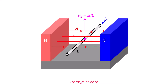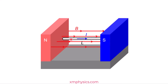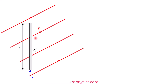Now this is if the rod is placed exactly perpendicular to the magnetic field. If the rod is placed exactly parallel to the magnetic field, then the rod will experience zero magnetic force. So the orientation of the conductor with respect to the direction of the magnetic field matters.